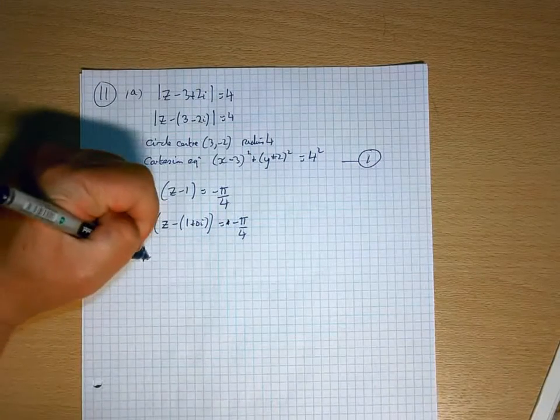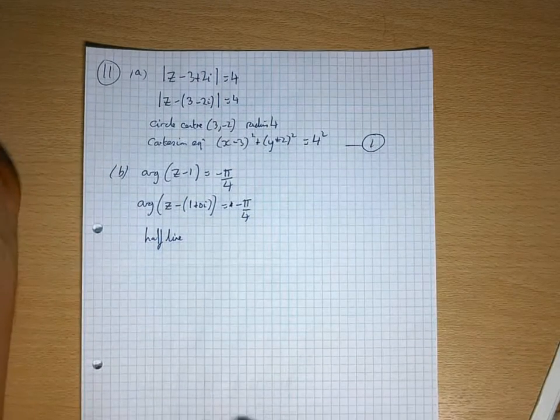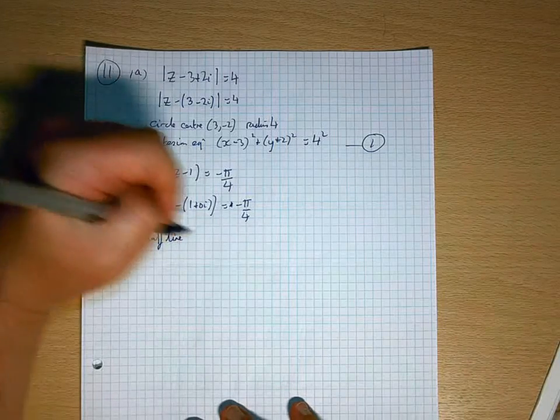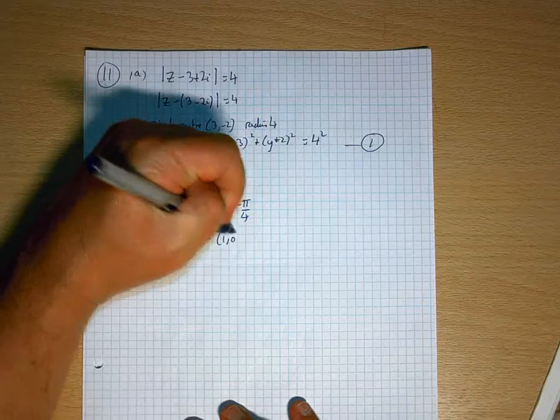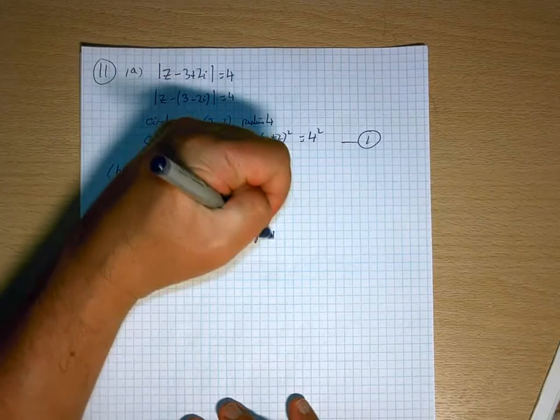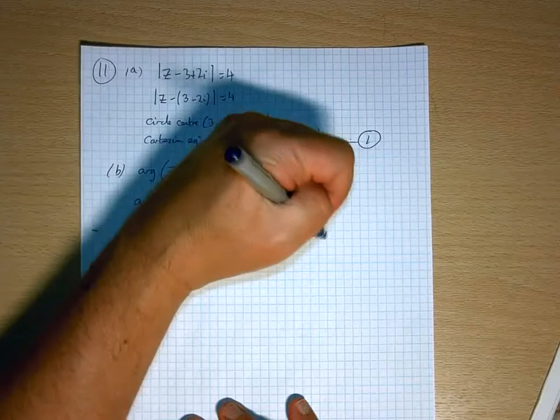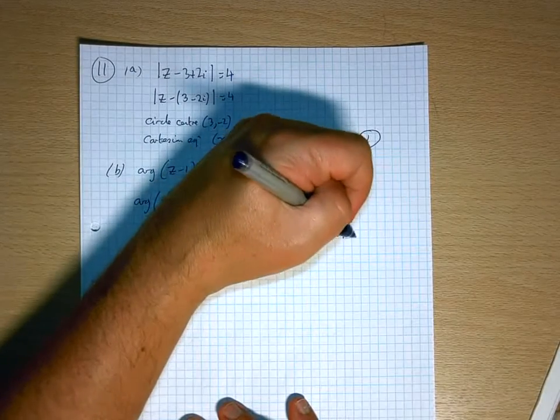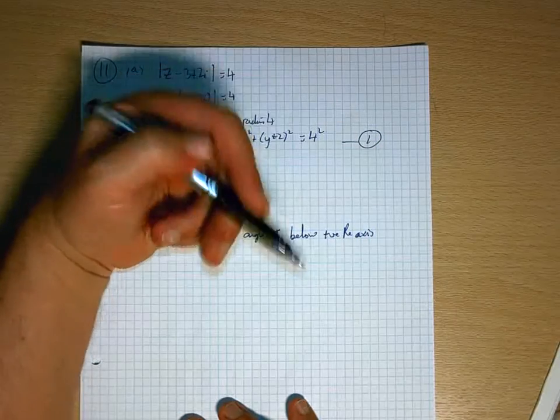Half line, centre 1, 0, angle pi by 4 below, because it's negative, so it's going to turn that way.